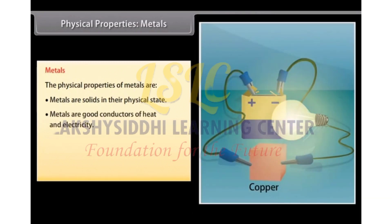Good conductors of heat and electricity: Metals are good conductors of electricity as they have free electrons. For example, silver and copper are the best conductors of heat and electricity, whereas lead is the poorest conductor of heat.